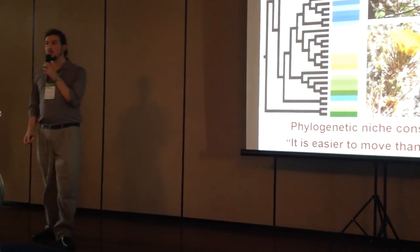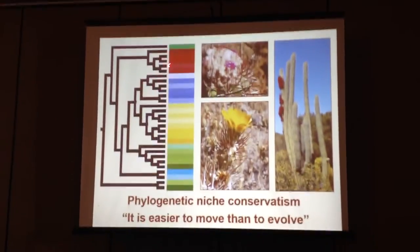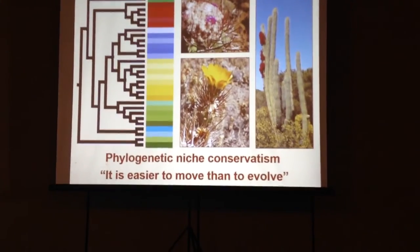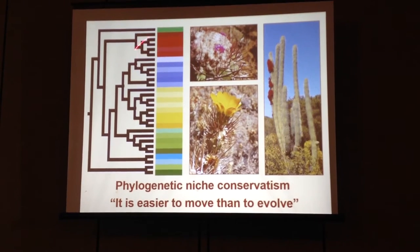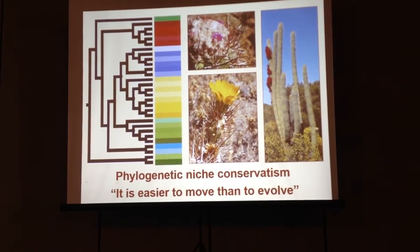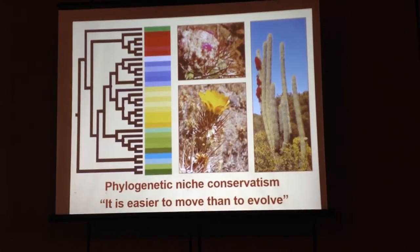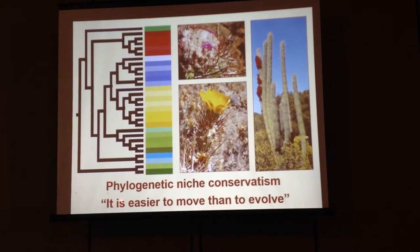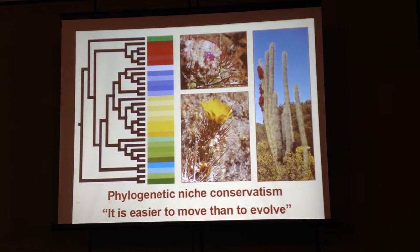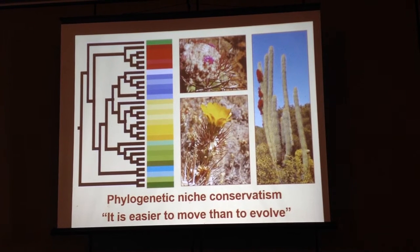As you might know, phylogenetic niche conservatism is the tendency of closely related species to retain the niches of their ancestors and of their closely related species, resulting in a pattern where closely related species are found in the same habitat. It can be summed up in the sentence: it is easier to move than to evolve, meaning that species will generally track their favorite environments over evolutionary time rather than adapting to new environments.